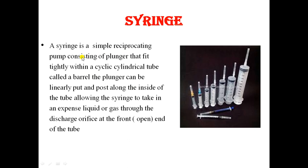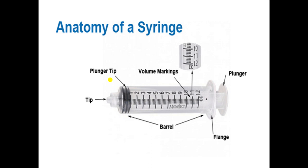A syringe is a simple reciprocating pump consisting of a plunger that fits tightly within a cylindrical tube called a barrel. The plunger can be pushed and pulled linearly along the inside of the tube, allowing the syringe to take in or expel liquid or gas through the tip at the front end of the tube. The anatomy of the syringe includes the plunger tip, tip, volume markings, plunger, flange, and barrel.